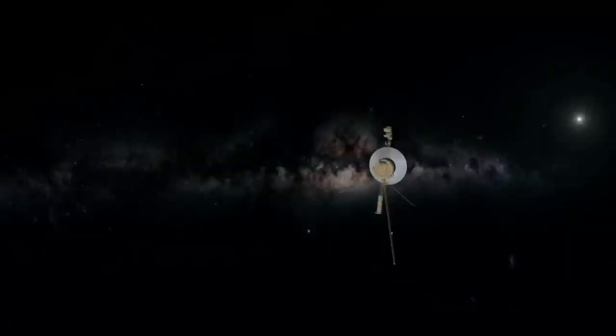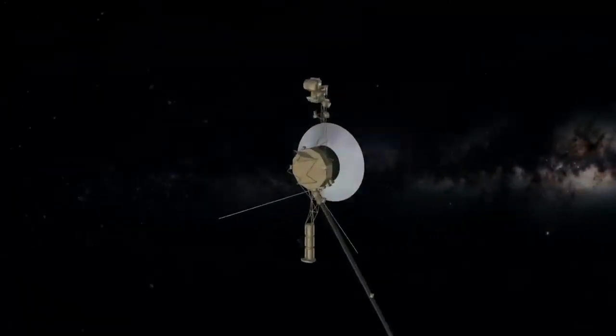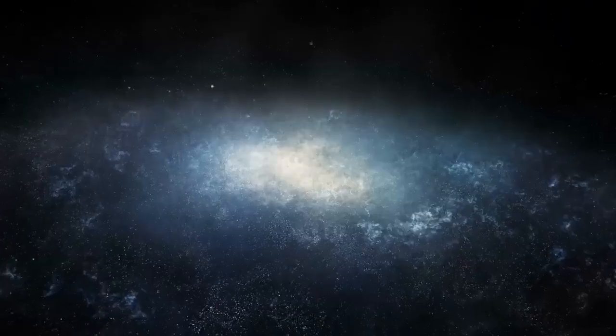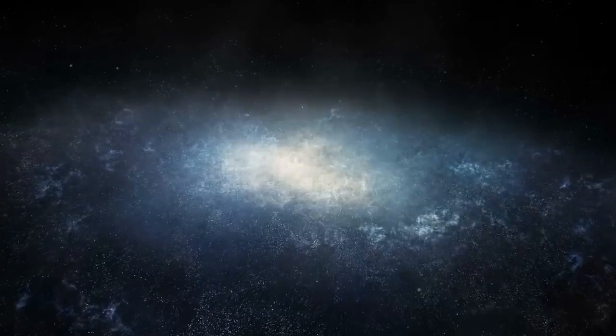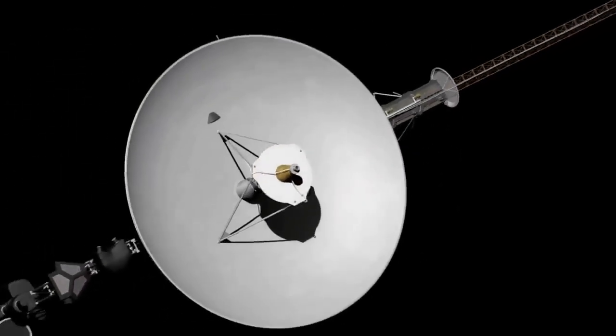It is evident that Voyager 1 is the most distant human-made object from Earth. Working with a system that is so far away and that was designed so many decades ago presents a number of challenges in addition to the communication lag. Even with the most powerful Earthly telescopes, Voyager 1 is far too faint to be seen.